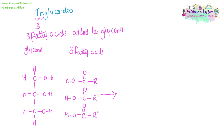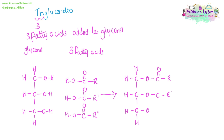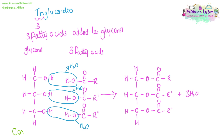Here I've drawn R groups — R, R dash, and R dash dash — just to show that they are different. When the fatty acids bond to the glycerol, the OH groups on either side will lose a water and become an oxygen in between the two carbons, leading on to the three fatty acid chains. When this bonding takes place, we will lose three water molecules, one from each bond that has been formed. When we lose water in a reaction, this is a condensation reaction.